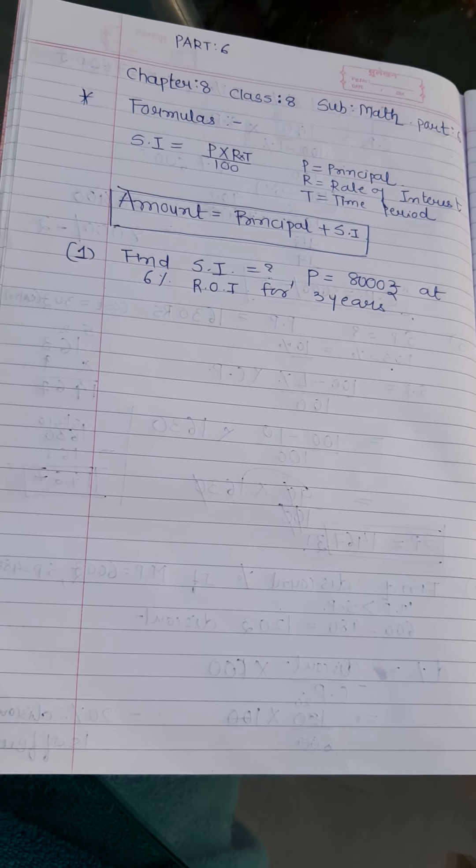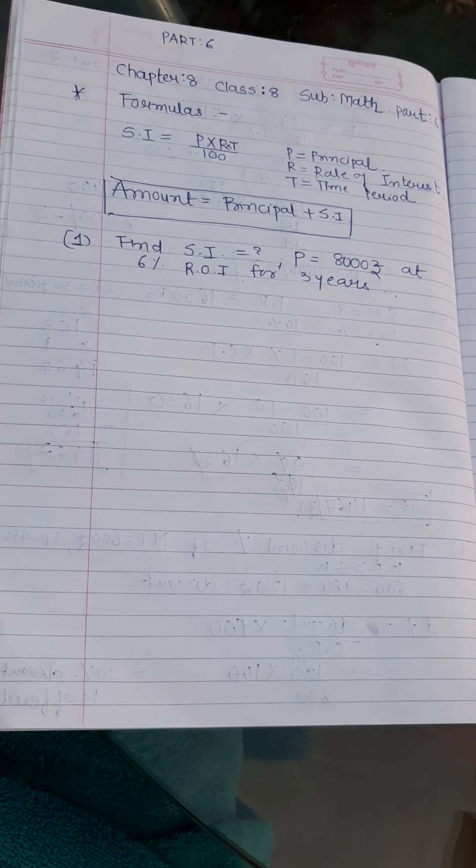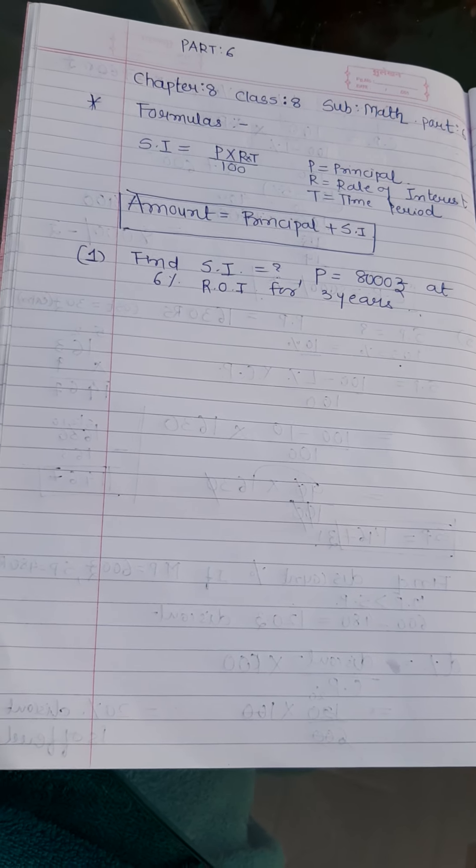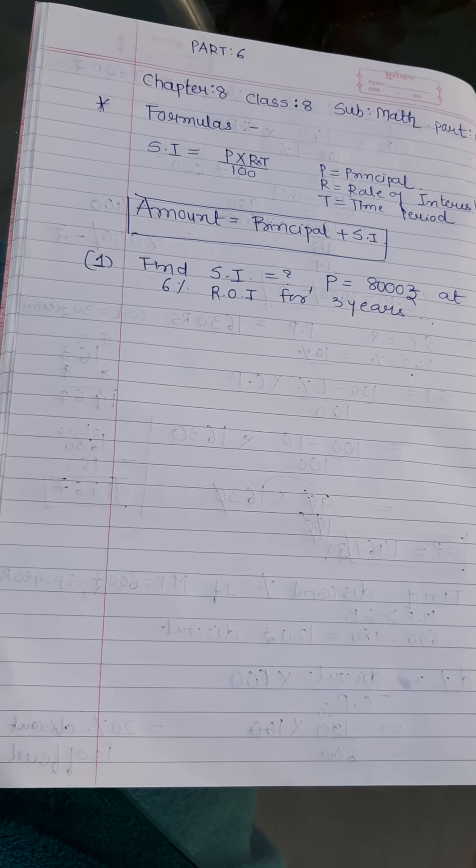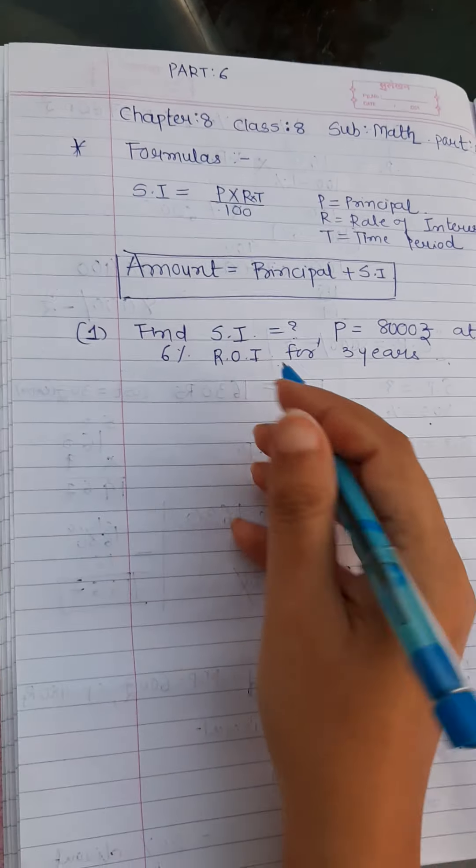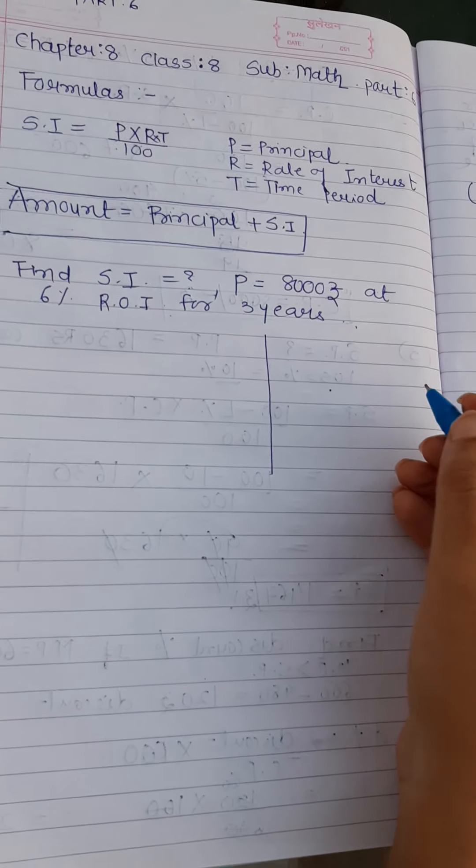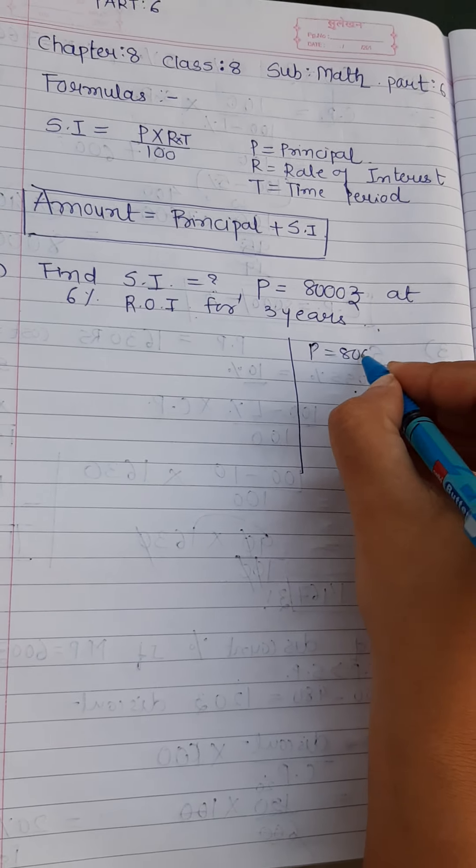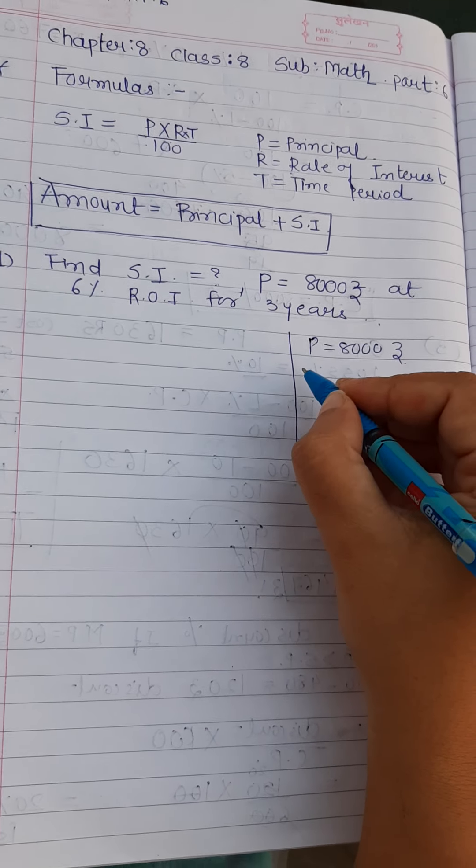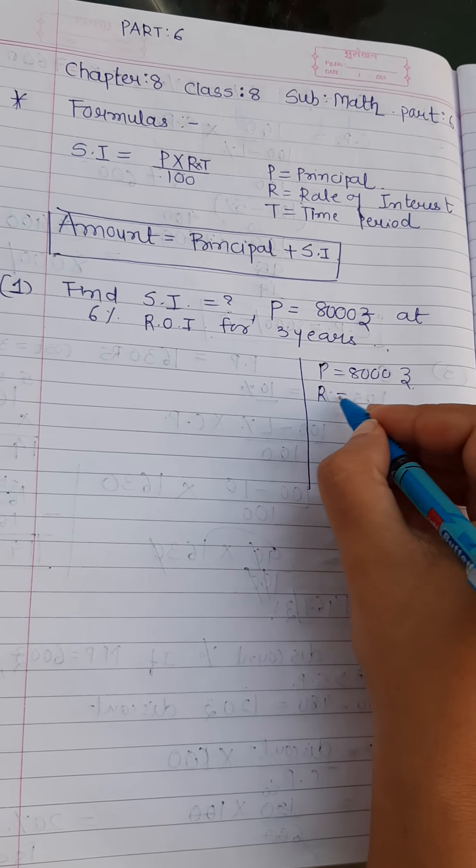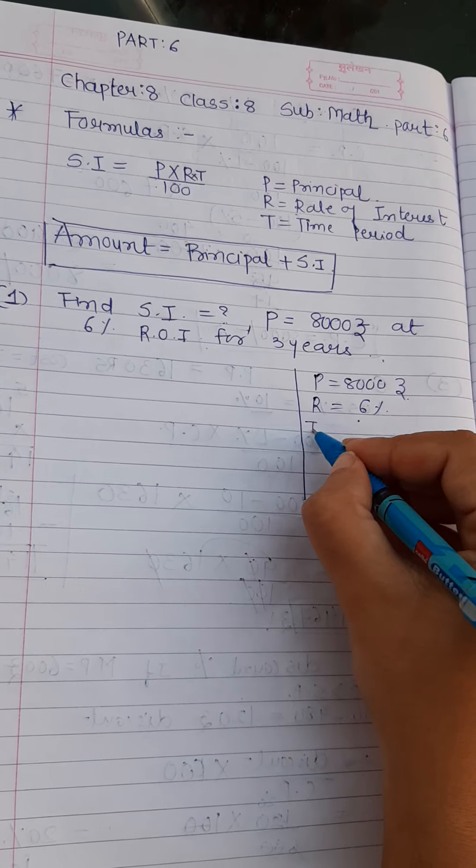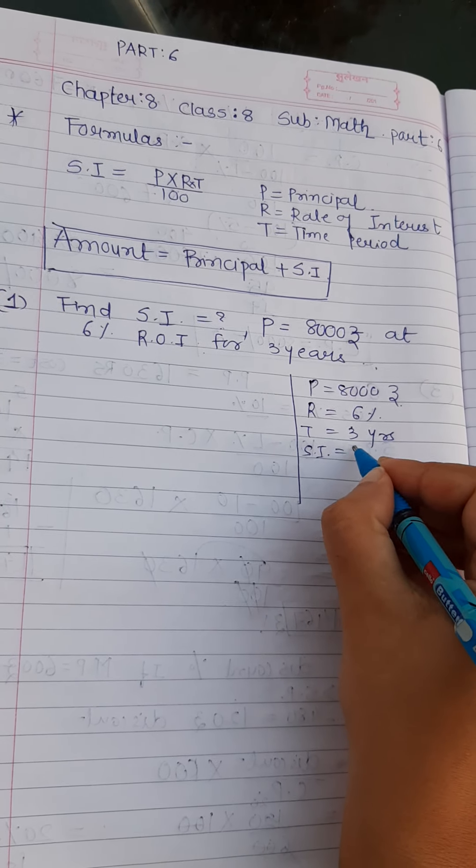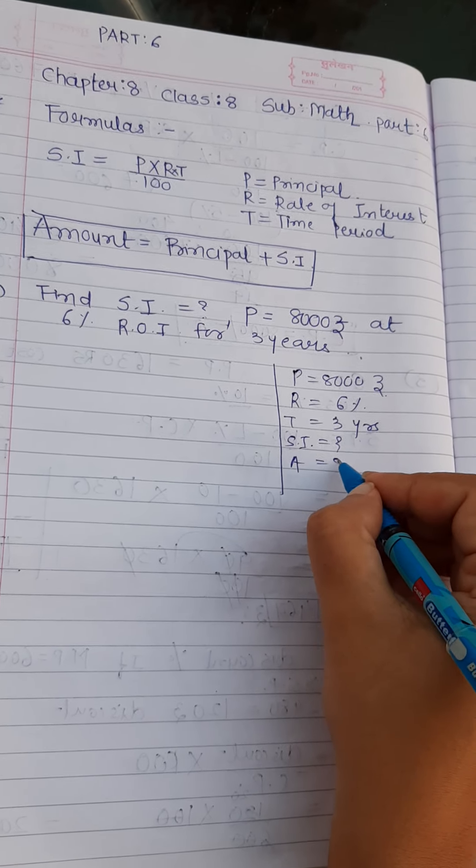So first is find simple interest when principal is 8,000. So someone is depositing some 8,000 rupees at 6% rate of interest and for 3 years. Right. So what I will do is first of all I will make a line here. Even you do that in examination. First of all, extract all the values. You have to find rate of interest is 6%, time is 3 years, and you need to find simple interest and the amount.